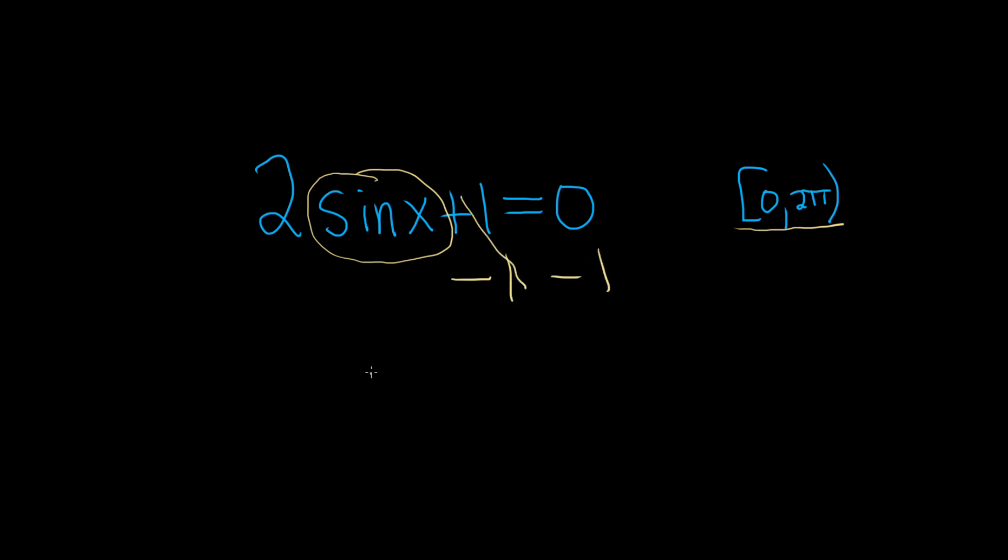That puts us at 2 sin x = -1. We're almost there. To finish solving for sine, we simply have to divide by 2. And so we have that the sine of x equals negative 1 half.